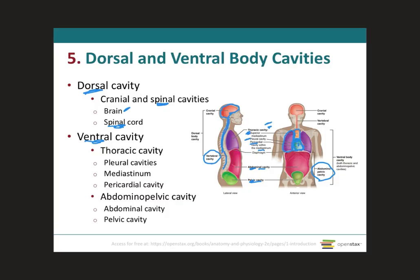In addition, the thoracic cavity and the abdominopelvic cavities are separated by a muscle called the diaphragm. This muscle is very important for respiration, and its functions will be covered in more detail when we get to the respiratory system in A&P 2.